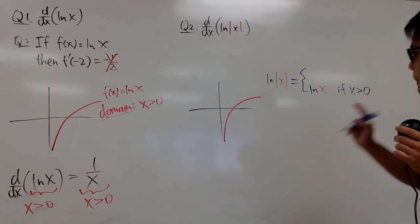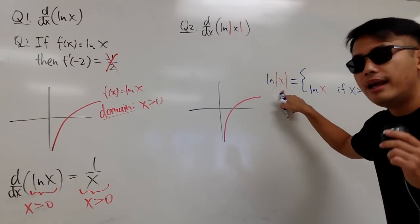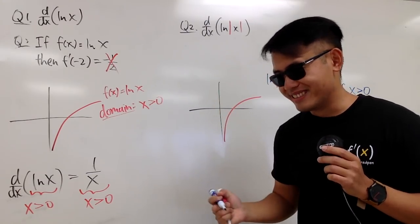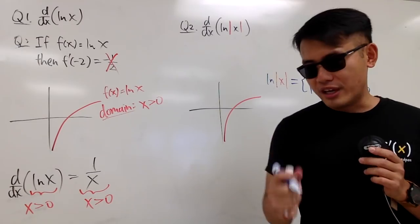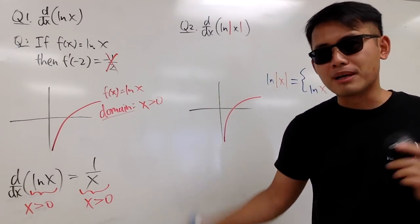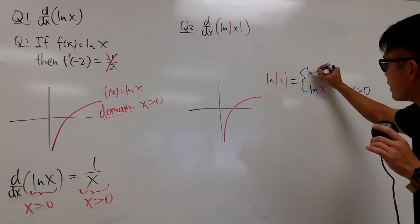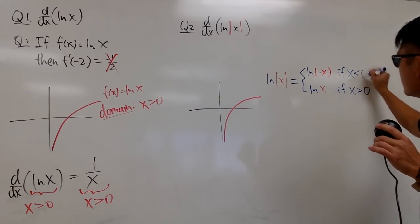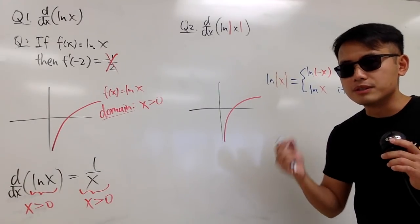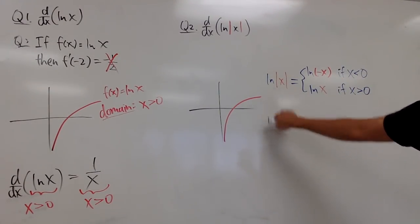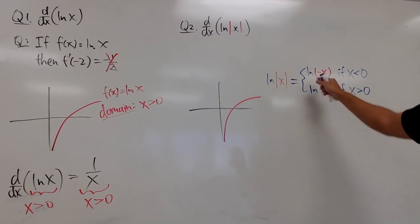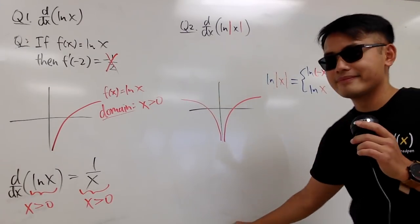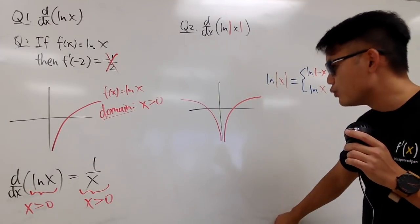Because of the absolute value, x gets to be negative — absolute value changes any negative numbers to positive. So if x is less than 0, absolute value of x equals negative x. Since ln of 0 is never defined, 0 is excluded. The left portion of the graph is just the left-right reflection of the right portion. This is the graph for ln of absolute value of x.